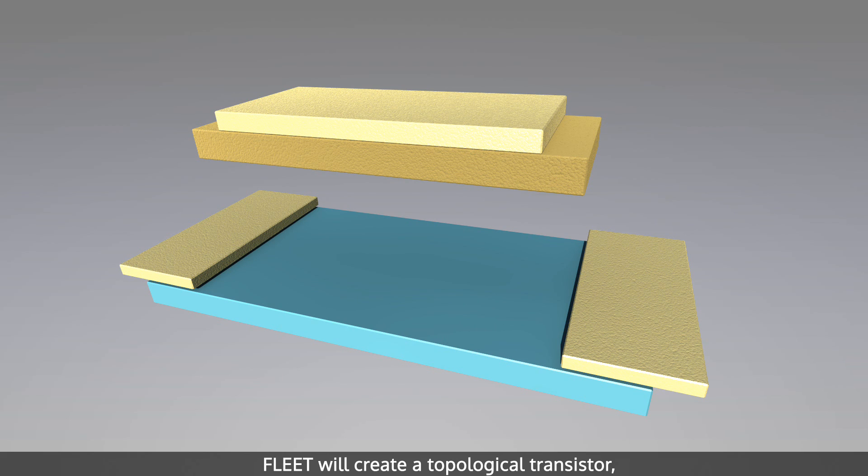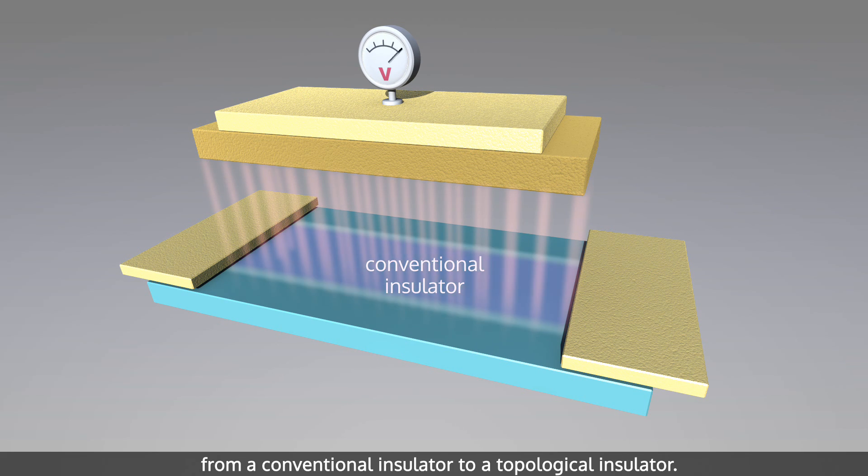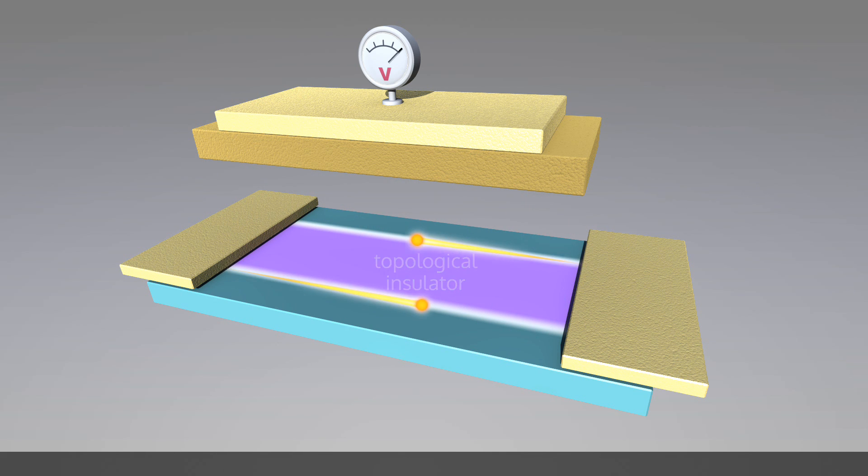Fleet will create a topological transistor in which a gate electrode switches the material from a conventional insulator to a topological insulator. The topological edges will carry current from source to drain without resistance.